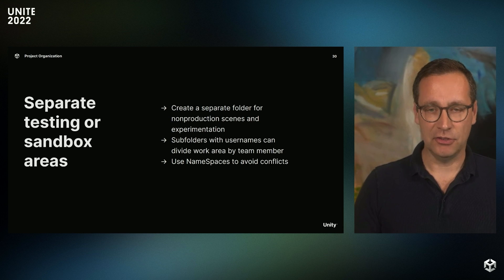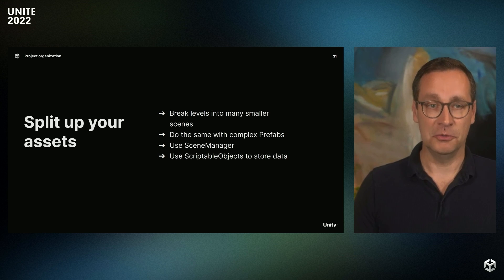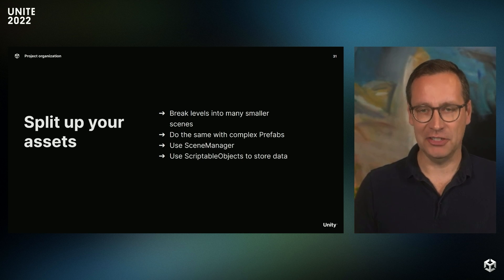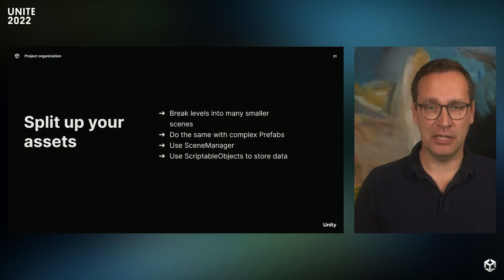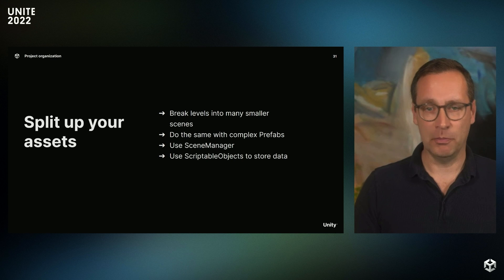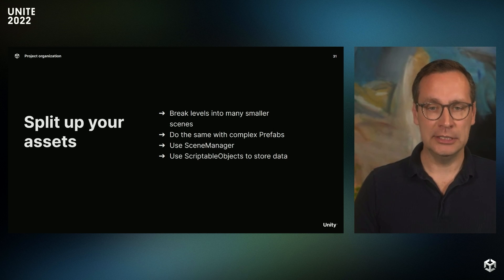Another thing to consider is using namespaces to avoid conflicts between class names you've declared in production versus in the testing codebase. In general, a good rule of thumb is to split up larger complex scenes and assets into smaller bits. It's often better to have several smaller scenes than one massive scene. The same goes for complex prefabs, where you can leverage nested prefabs to create more modularity. This way, artists and designers can better collaborate in parallel while minimizing the risk of merge conflicts. It also makes tracking level design changes much easier in version control. You can then use the Scene Manager to load multiple scenes as needed during runtime, and similarly make use of ScriptableObjects for storing data whenever possible, to separate logic and data in a more clean and scalable way.